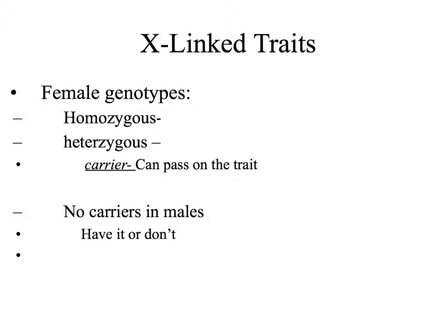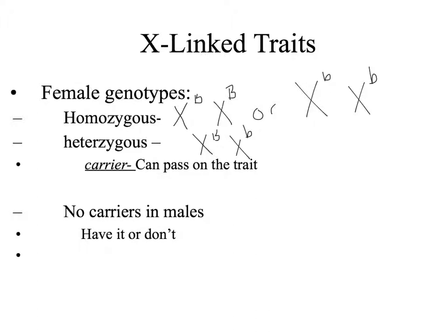A female can be homozygous dominant (X^B X^B), homozygous recessive (X^b X^b), or heterozygous (X^B X^b). Notice that the alleles are written as superscripts on the X chromosomes. Males, on the other hand, only carry one X chromosome, meaning they are not homozygous or heterozygous — they either have the trait or they don't. These alleles will only be carried on the X chromosomes, so males will have X^B Y or X^b Y.